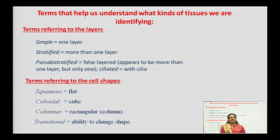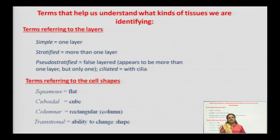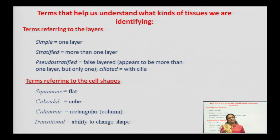One more tissue type according to shape is transitional tissue. Transitional tissues have the specific ability to change their shape — sometimes cuboidal, columnar, cone-like, or sometimes squamous and flat — according to the functions they have to perform.